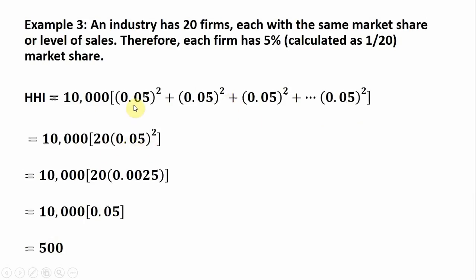We've got 20 firms exactly the same with 5% market share, so we can simplify it like that. Doing some math, 0.05 squared is 0.0025. Multiplying that by 20, we get this. And we have a Herfindahl-Hirschman Index here of 500, a much less concentrated industry compared to Example 1 and Example 2.